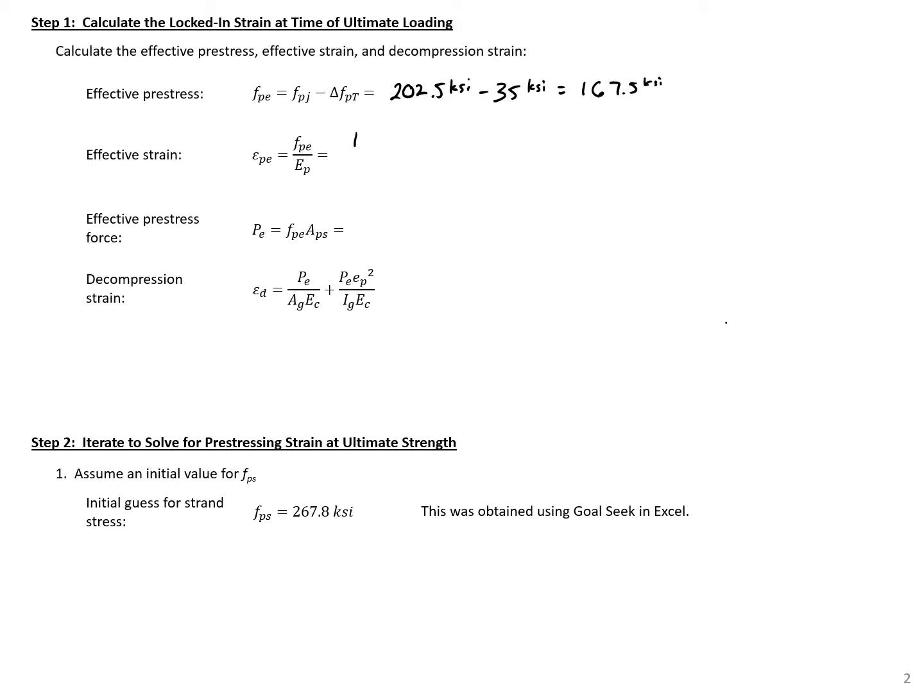Our effective strain, we can just take this stress, 167.5 divided by 28,500 KSI, the stiffness of our pre-stressing steel, to get an effective strain here of 0.00588.